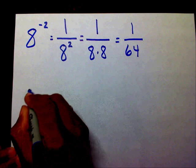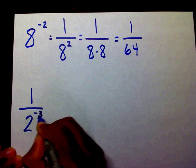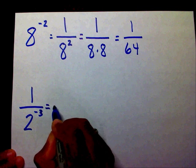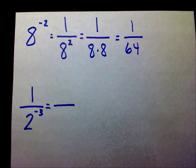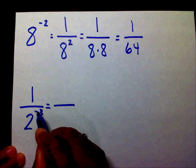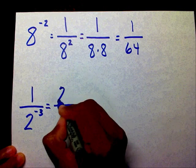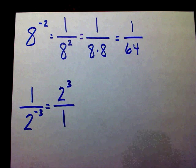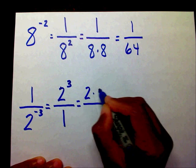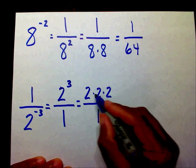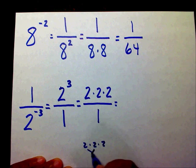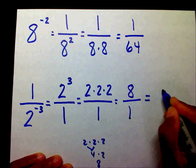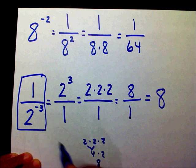But what if the denominator had a negative exponent? When you see the negative exponent, you want to think fraction — automatically, I need to create a fraction. So I have 2 to the negative 3rd power in my denominator. If I want to make this positive, I need to move it to my numerator, and this time the 1 is going to go in the denominator. I'm going to simplify: 2 to the 3rd power means 2 times 2 times 2 over 1. 2 times 2 is 4, times 2 is 8. So it's 8 over 1, which equals 8. I know that 1 over 2 to the negative 3rd power equals 8.